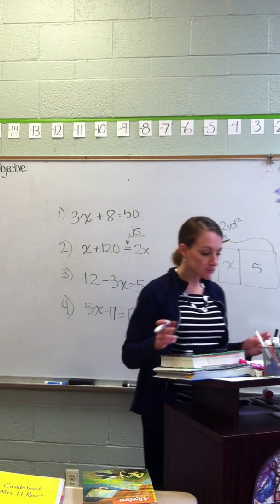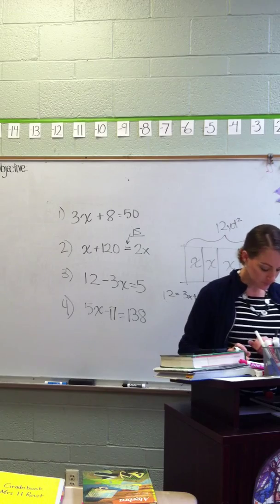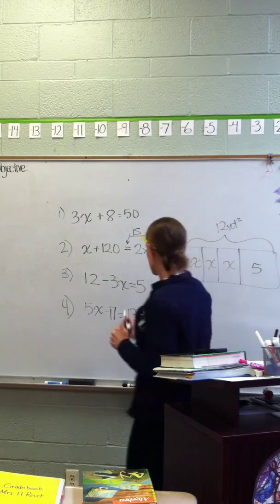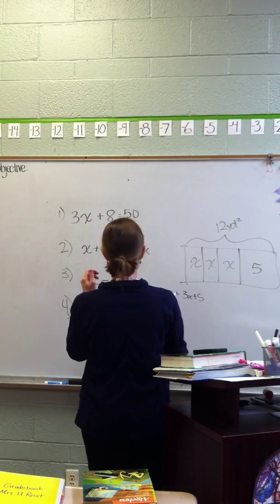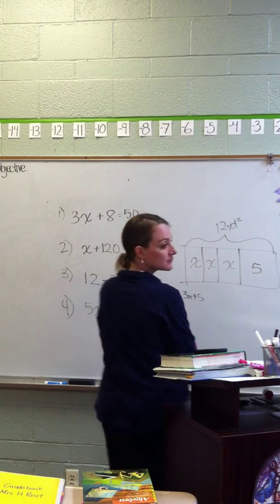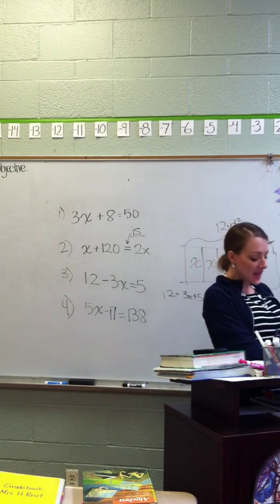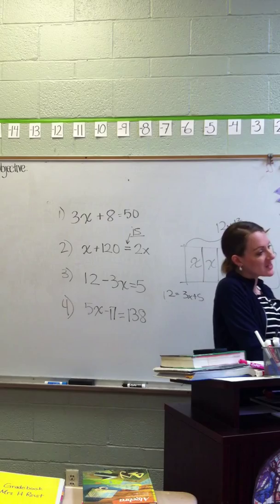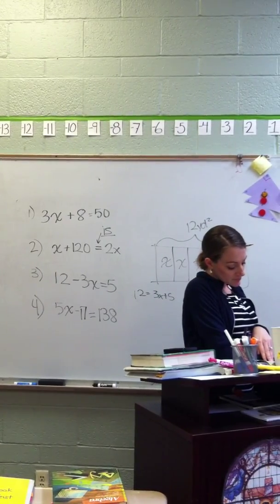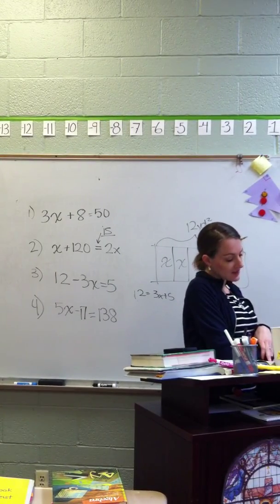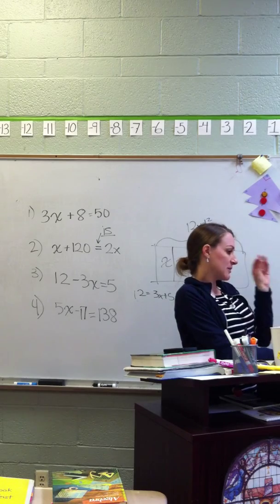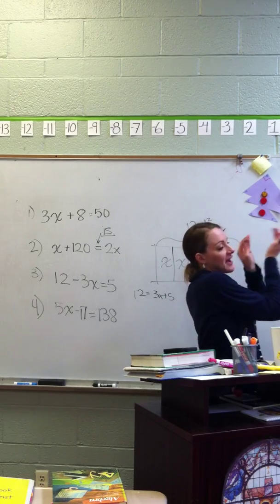Mrs. Rice, can you do X from please? 17 minus 5. X. No. Because it says a number, the product of a number. And 5, the product of a number and 5. So, the number and 5 are together.